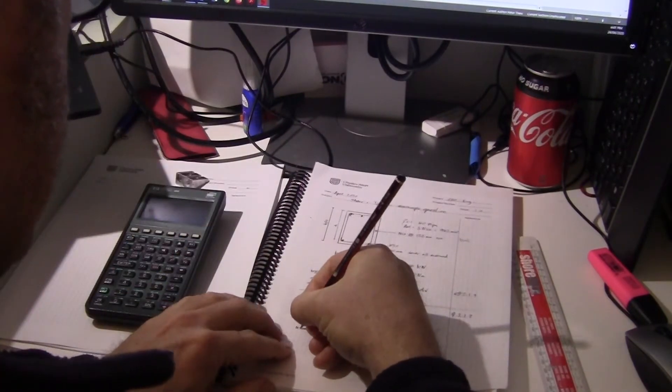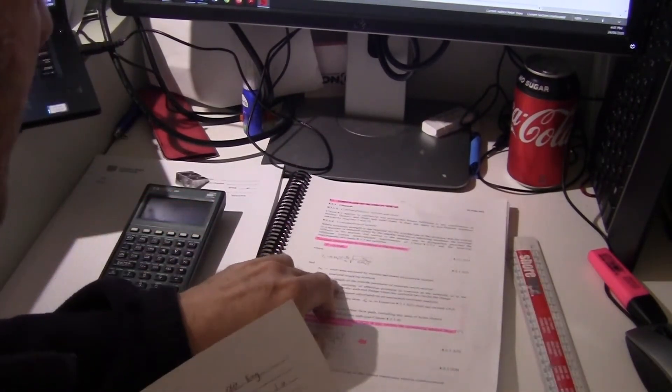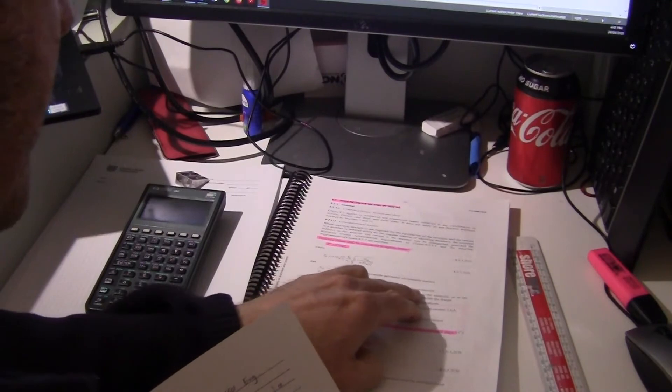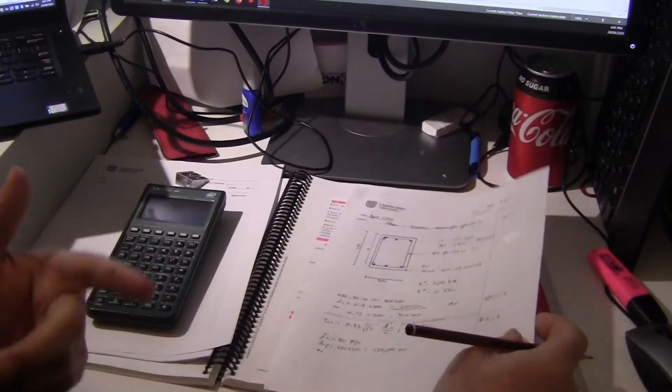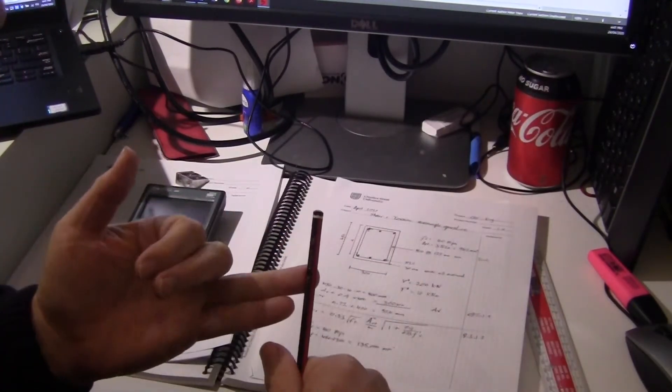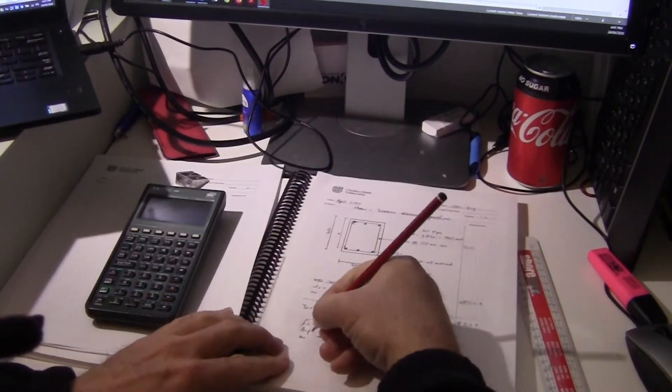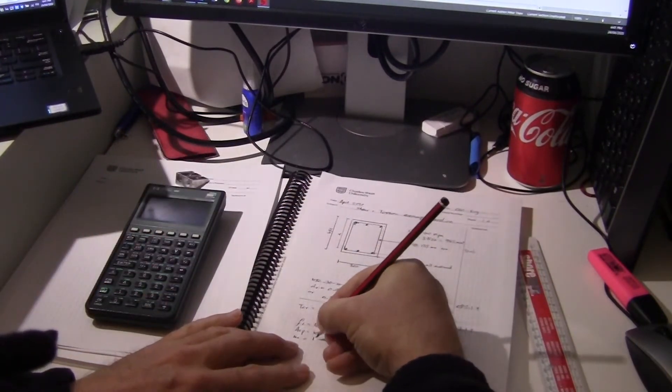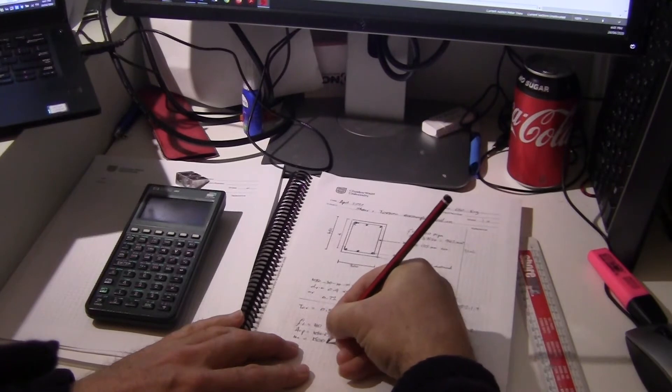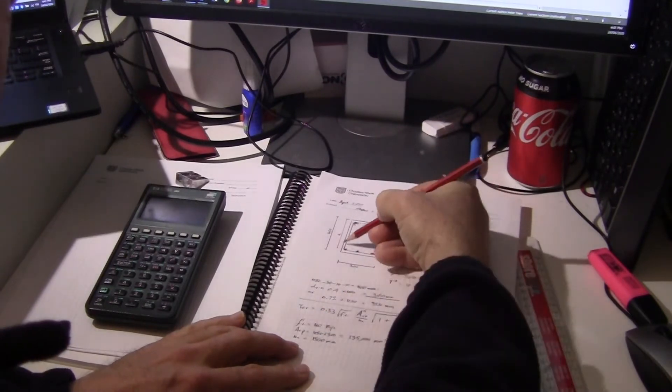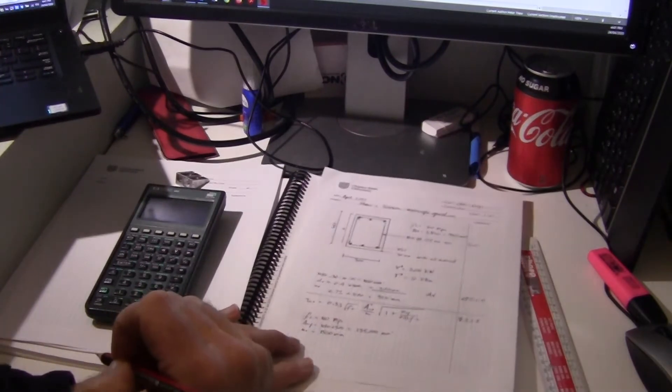All right, u-c is defined right there as well. The length of the outside perimeter of the concrete cross section. Well, that's the perimeter. So it's 450 plus 450 plus 300 plus 300, which is 900 plus 600, which equals 1500 millimetres. That's the perimeter around that beam there.